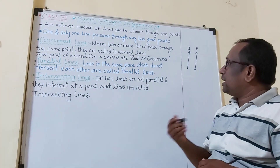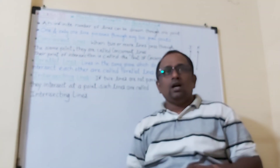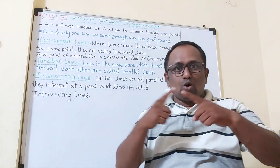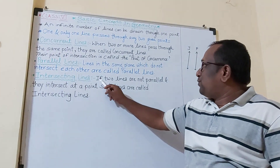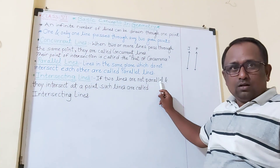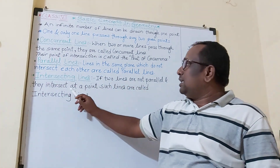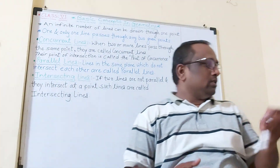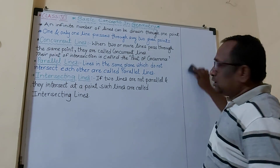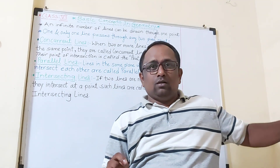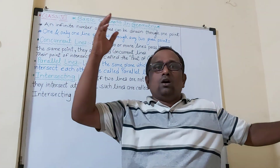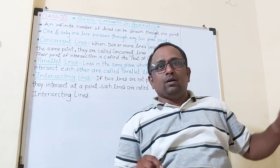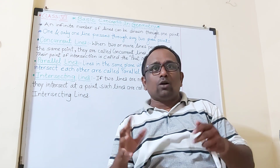Now we move to the next type: intersecting lines. As the word indicates, intersecting means cross — they intersect each other. If two lines are not parallel and they intersect at a point, such lines are called intersecting lines. For example, maybe some of you like kite flying — you are flying a kite from your terrace and your friend is also on a terrace flying their kite.